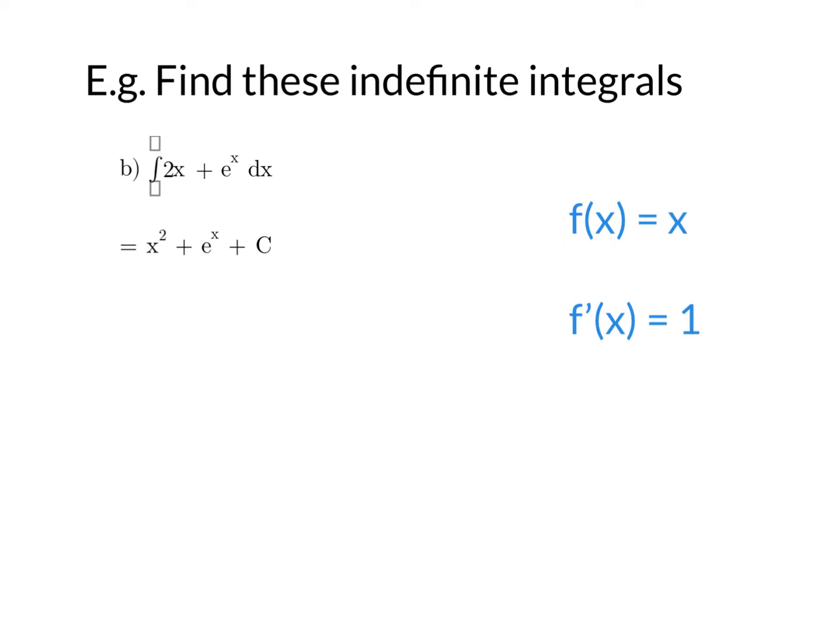Second one, integral of 2x plus e to the x. So if we just do the 2x as we normally do, raise your power, divide by your new power, that gets you x squared. Let's take the e to the x, and just focus on the fx part over to the side. So the fx is the x. The f dash of x is 1. And you'll notice that I've got 1 in front of e to the x. So the integral of e to the x is e to the x, and then I plus the c.